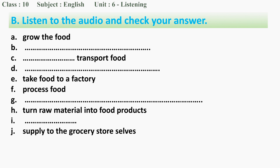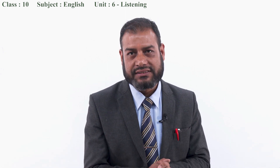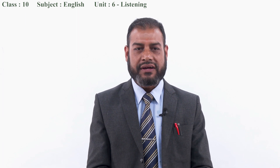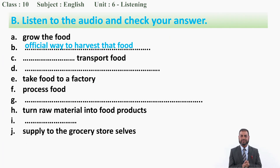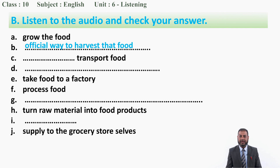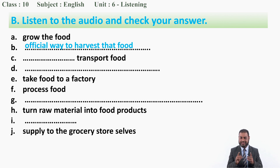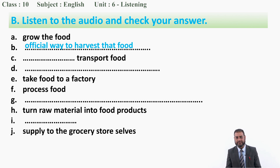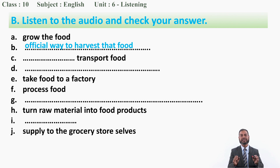Now take your answers with me. For B, the missing activity is 'the most efficient way to harvest that food,' or simply 'harvest that food.' You can find this in the audio where it says 'the most efficient way to harvest that food.' If it's not correct, you can correct it now — this is how we practice during listening tasks.